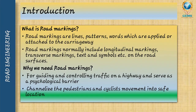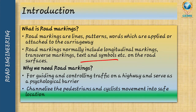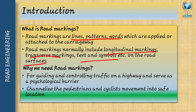First of all, we will see the introduction part — what is road marking. Road markings are lines, patterns, and words which are applied or attached to the carriageway base. Road marking normally indicates longitudinal marking, transverse marking, text and symbols on the road surface. These lines, patterns, and words can be marked in the carriageway.